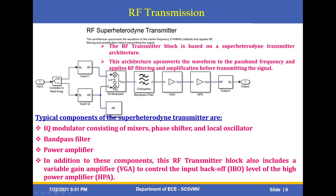The RF super-heterodyne transmitter block is based on a super-heterodyne transmitter architecture. This architecture up-converts the waveform to a carrier frequency of 2140 megahertz — the default frequency — and applies RF filtering and amplification before transmitting. The typical components of the super-heterodyne transmitter are: the IQ modulator, consisting of a mixer, phase shifter, and local oscillator; a bandpass filter of the attributive type; and a power amplifier block that includes a variable gain amplifier (VGA) and a high power amplifier (HPA) to control the input backoff (IBO) level.